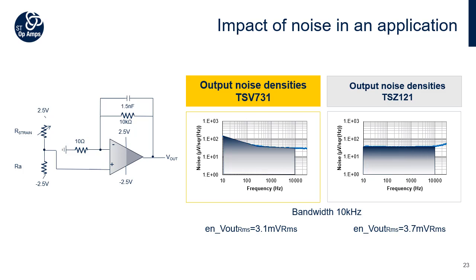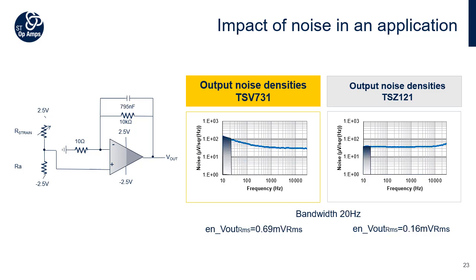If the bandwidth of the application is quite large, there is no difference in terms of noise error between the two op-amps — the TSV731 and TSZ121 — as they have the same white noise of around 35 nV/√Hz. The strain gauge is a DC application, so it is important to limit the bandwidth to reduce the noise amplitude. Here, the bandwidth is limited to 20 Hz thanks to a 795 nF capacitor added in the feedback. In this case, we can see a significant difference between the two devices. The TSV731 shows 1/f noise that the TSZ121 does not have, due to its chopper architecture. With the TSZ121, the noise impact on the output is reduced by a factor of 4.